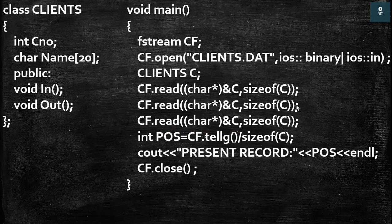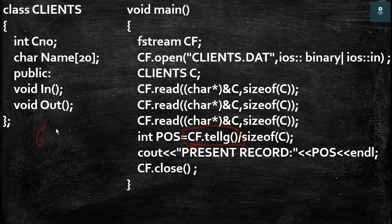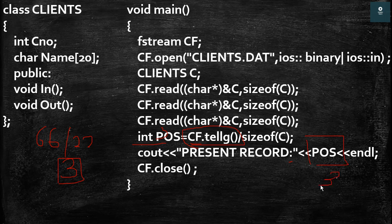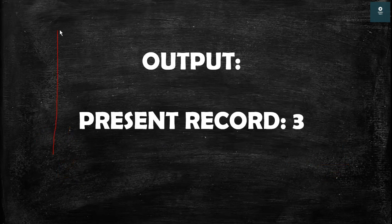After this we have: integer pos = cf.tellg() / sizeof(c). Now sizeof(c) is 22 and tellg() will return the current location of the get pointer, which is 66. So we have pos = 66 / 22 = 3. Hence the value of pos is 3, and then we have the output as 'present record:' followed by pos. Since pos is equal to 3, the output is 'present record: 3'.